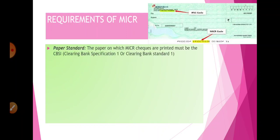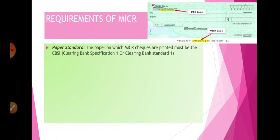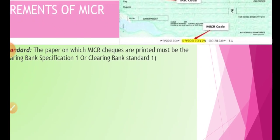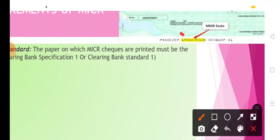Regarding requirements, the paper on which the MICR cheque is printed should follow the Clearing Bank Specification and Clearing Bank Standard 1. As you can see in the image, the MICR code is positioned in the middle at the bottom of the cheque. This is a nine-digit code: the first number is the cheque number, followed by the MICR code which is printed on the cheque.